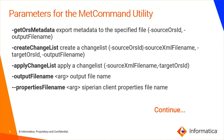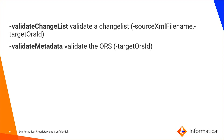Once the create change list step is done, you need to apply the changes to the target ORS. For that, you pass the argument called apply change list. There is also an optional parameter for the output file name if you want to save the change list information to a file. You can also optionally pass the siperian_connection.properties file via the command line.